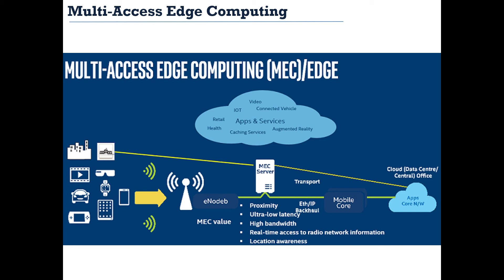The benefits of multi-access edge computing include proximity — meaning computing capability is close to where the data is being created. Ultra-low latency means the user may not even know that processing is happening somewhere else; it feels almost as if it's happening in his own device. High bandwidth: with 5G as a fueling factor, having an edge around the user provides high bandwidth, which means less use of network resources, because of network function virtualization.